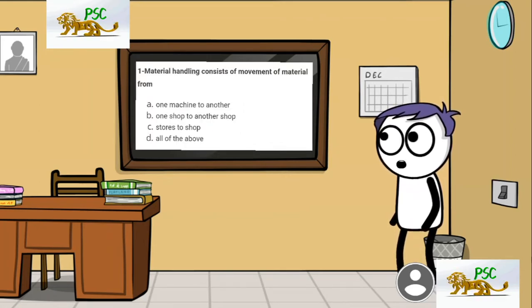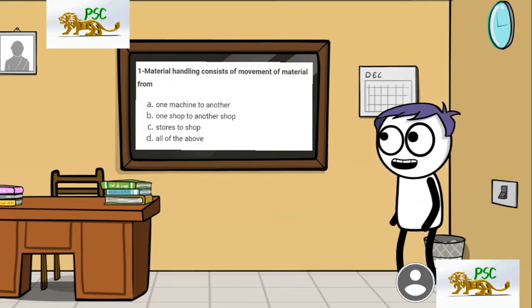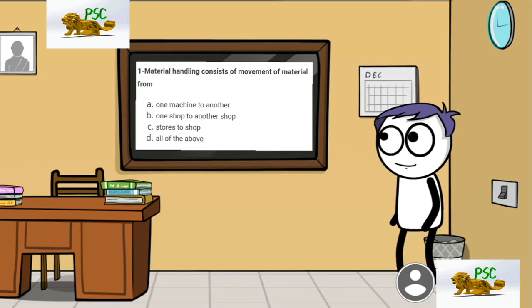The first question is: material handling consists of movement of material from — option A: one machine to another; option B: one shop to another; option C: stores to shop; and option D: all of the above.